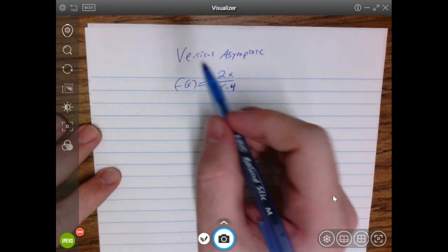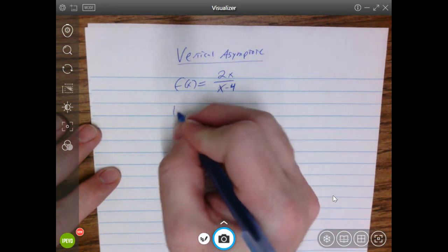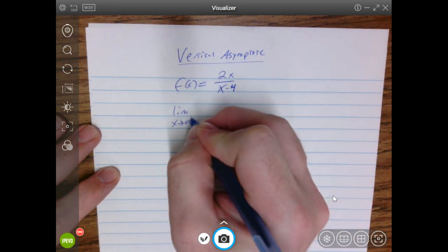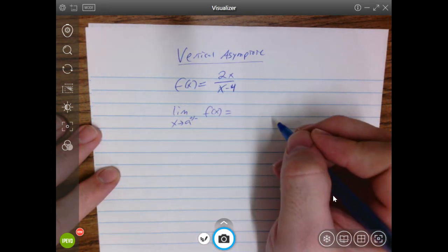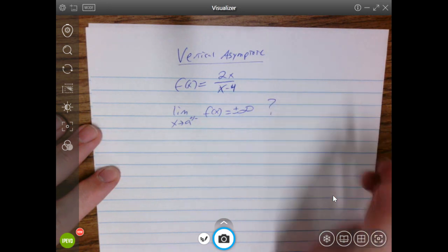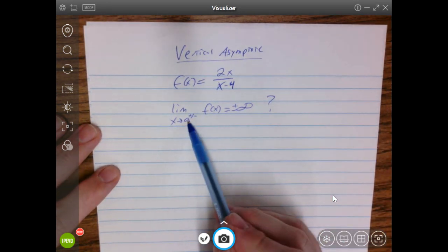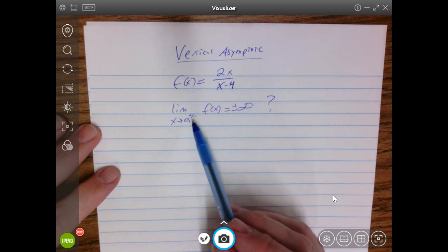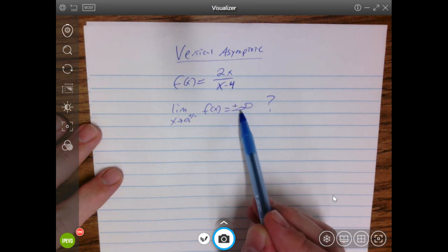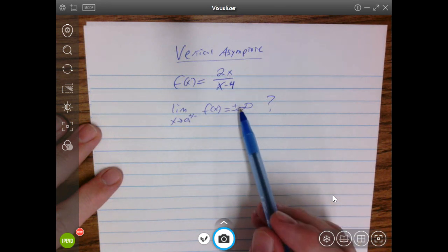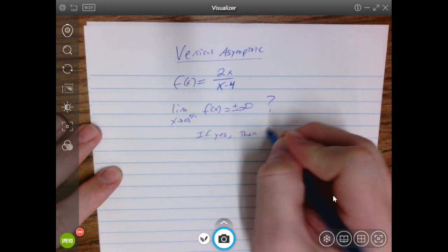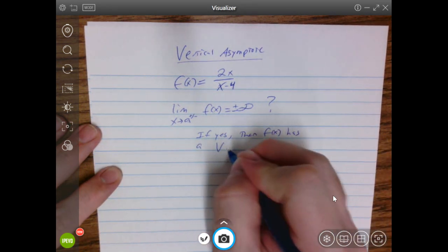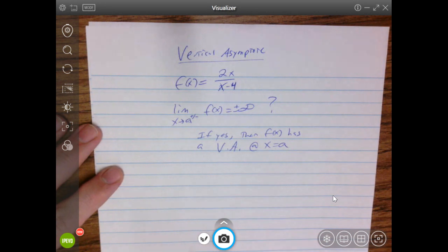So here's how vertical asymptotes sort of separate themselves from everything else. This is what you're looking for. Is there an a value, either from the right or the left, for this function that actually yields plus or minus infinity? That's the question you want to ask yourself. Is there an a value, some actual value a, not infinity, but an a value, whether you go from the right or the left, that yields a limit of either plus or minus infinity? If the answer to that question is yes, then f of x has a vertical asymptote at x equals a.